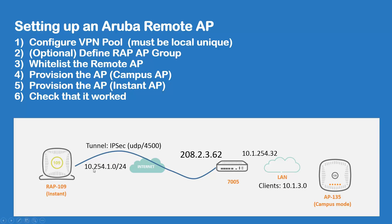So what's a remote access point? A remote access point is basically the same access point as you have in the enterprise. They build a tunnel to the mobility controller, which is here in the middle. Although the tunnel is not going over the local area network — it will be running over the internet using IPsec or UDP port 4500.